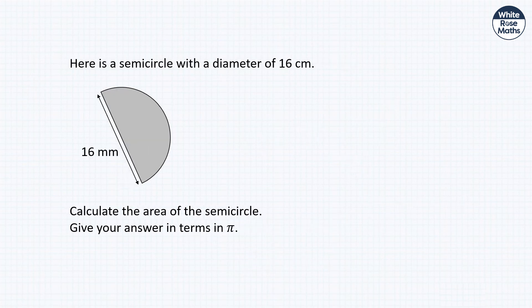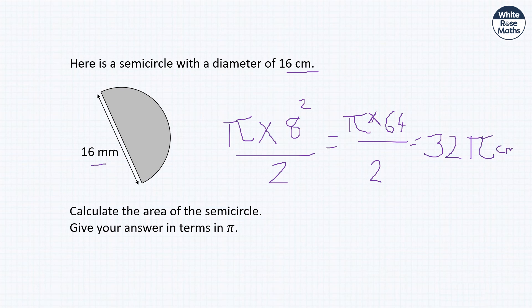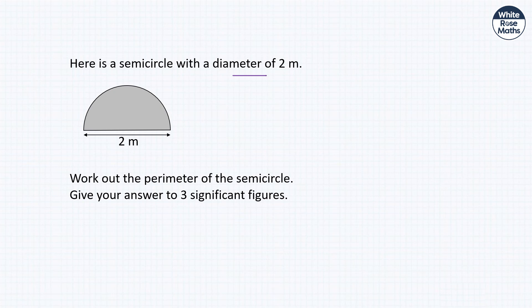A semicircle with diameter 16 centimetres — calculate the area in terms of π. The radius is 8, so area = π × 8² ÷ 2 = 64π ÷ 2 = 32π centimetres squared.